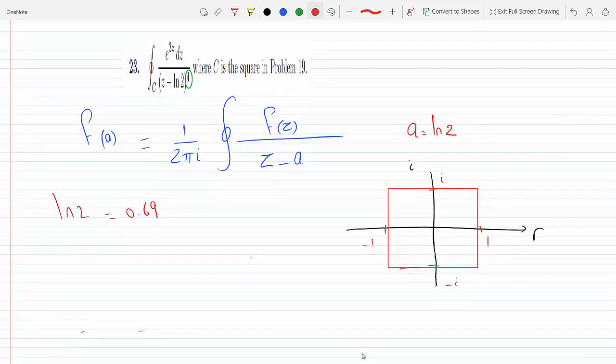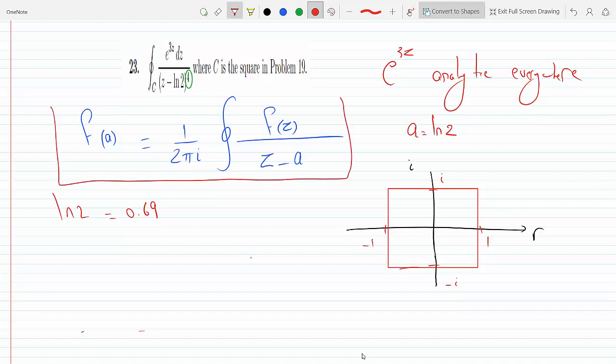The only difference between this one and the one we did is we have a 4. And we said it's the square, C is the square problem 19, same bounds, plus minus 1, plus minus i. We said that e to the 3z is analytic everywhere. And ln 2 is 0.69, so that's contained in C. And therefore we can use this. Okay, now look.